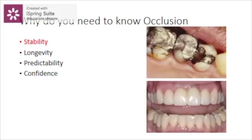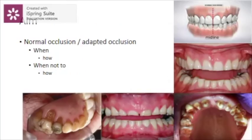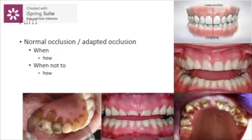No occlusion is at a starting or ending point — it is at some stage of adaptation. The first picture shows ideal occlusion; the last picture shows almost flat teeth. Each patient has an occlusion that is unique, a consequence of the conditions in their mouth. The aim of this presentation is to understand normal or ideal occlusion and its adapted state, and when doing full mouth rehabs, when to attempt for a normal occlusion and when to stick to the adapted occlusion.